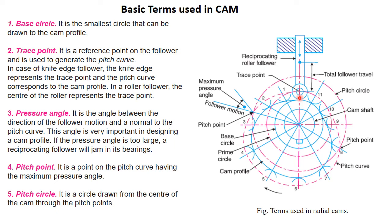In a roller follower, the trace point is located at the center of the roller itself. In the case of a knife edge follower, since it has direct contact and traces directly the shape of the cam, the knife edge itself is treated as the trace point.